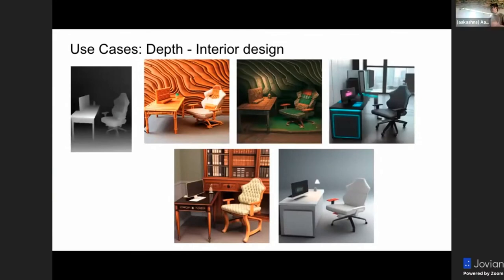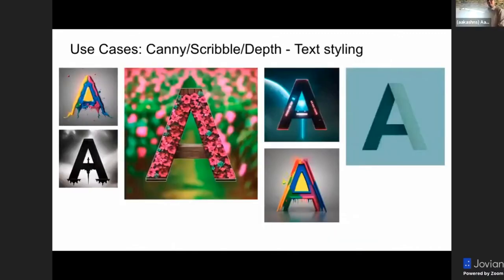Another use case is interior design with ControlNet. What we can do is just give a depth map — you can call it a Blender output or a depth map on the left-hand side — and now you can generate different interior settings just by tweaking the inputs a little bit. You provide this image, set depth as the preprocessor and model, then say 'a futuristic Tron Legacy style living room' and you get the right-most image. Say 'World of Warcraft orc style chair' and you get the center image. Say 'everything made of bamboo furniture' and you get the left-most chair. All the images are looking very much identical in composition — this was not possible without ControlNet.